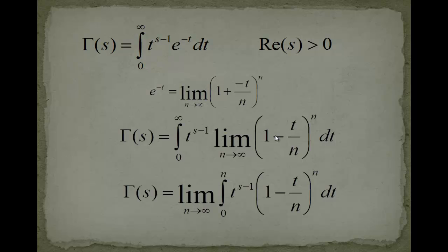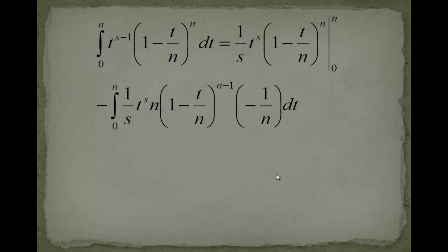Now the next step what I am doing is actually I will do a partial integration of this stuff. This part will be integrated and this will be differentiated. Now look what happens. Okay we have the integral from zero to n, t to the s. So this is stuff that we had before.